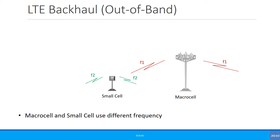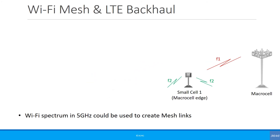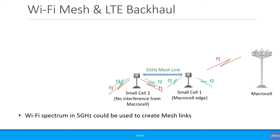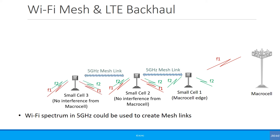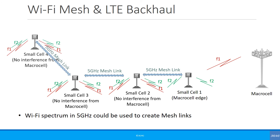Another approach is out-of-band backhaul, where the macrocell transmits at one frequency and the small cell transmits at another frequency, so there is no interference between them. You can also extend coverage using a Wi-Fi mesh: one small cell at the edge of the macrocell transmits out-of-band on frequency F2, while another small cell outside the macro range transmits on both F1 and F2. Small cell 1 and small cell 2 are connected by a point-to-point 5 GHz Wi-Fi mesh link, and this concept can be expanded to connect multiple small cells.